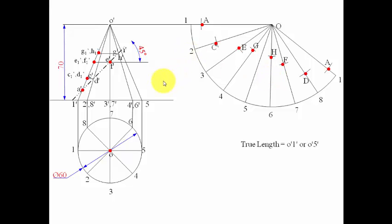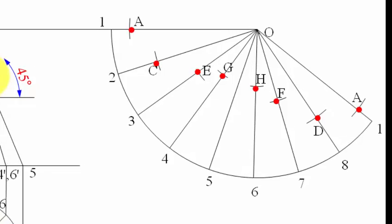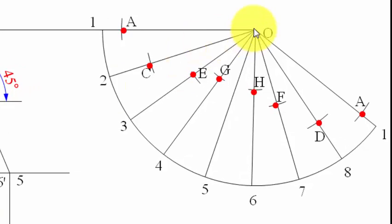The last point I-dash already lies on the true length O-dash 5-dash, so no projection is needed. We simply take a radius of O-dash to I-dash, and with O as center cut an arc at position 5 to get point I on the development.